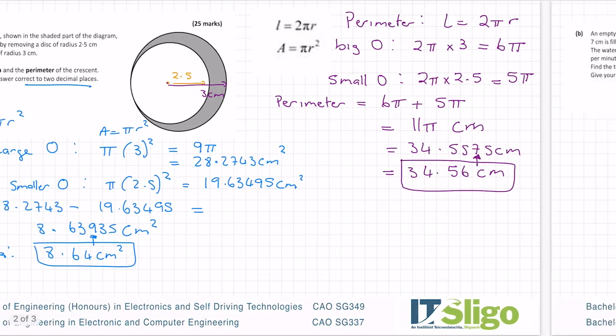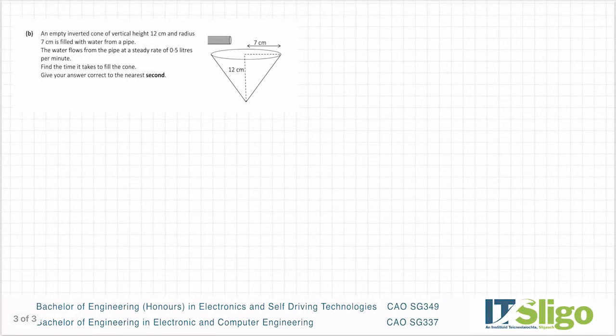Now let's go on to part B. Quite a different question, not related to part A. An empty inverted cone of vertical height 12 cm and radius 7 cm is filled with water from a pipe. The water flows from the pipe at a steady rate of 0.5 liters per minute. Find the time it takes to fill the cone. Give your answer correct to the nearest second.